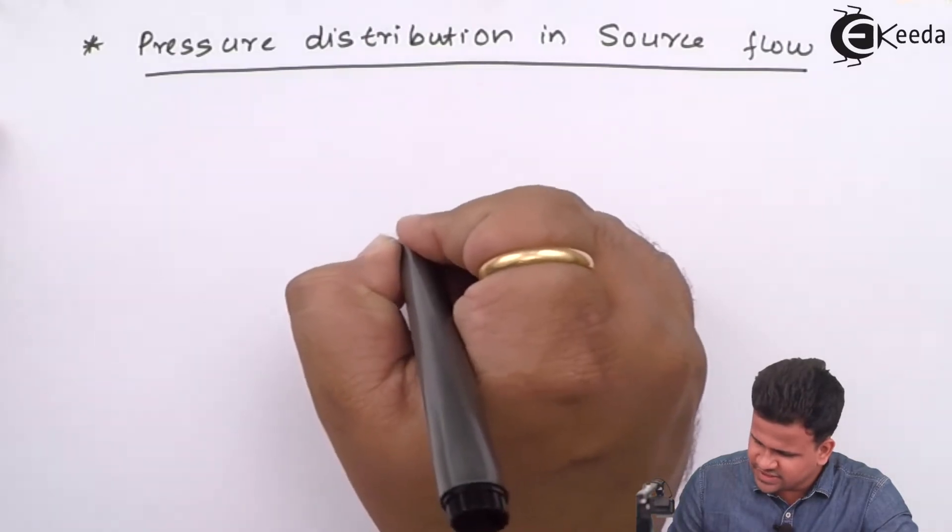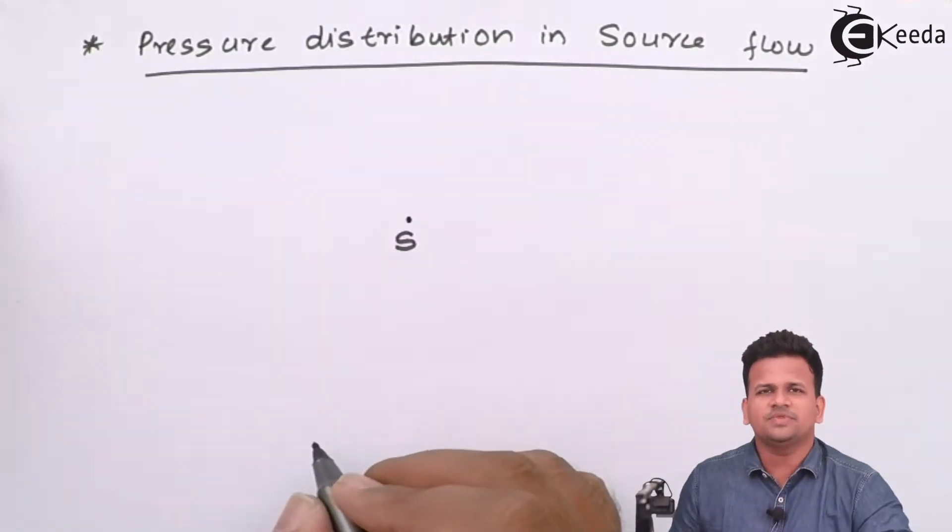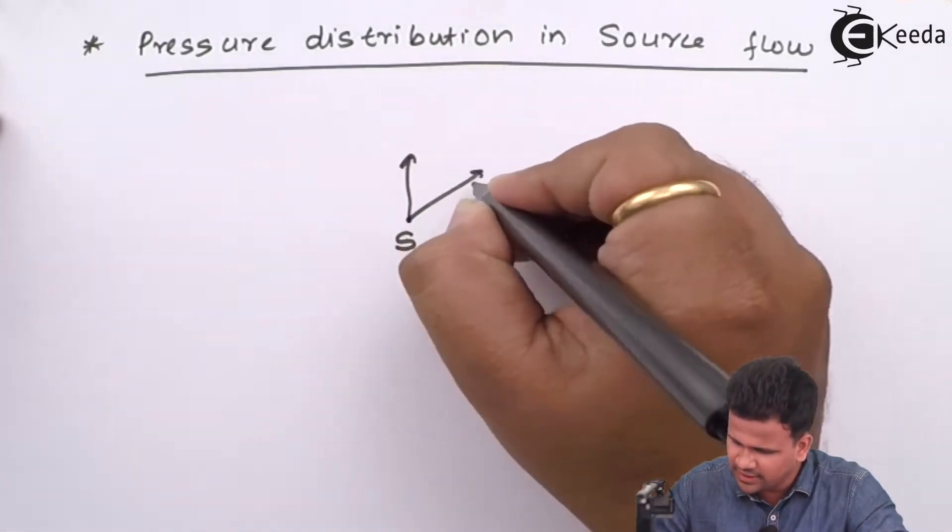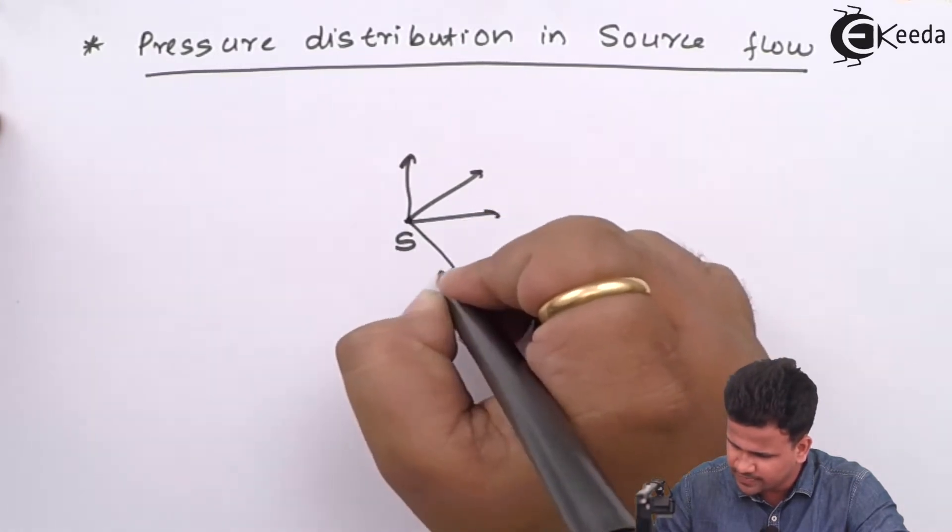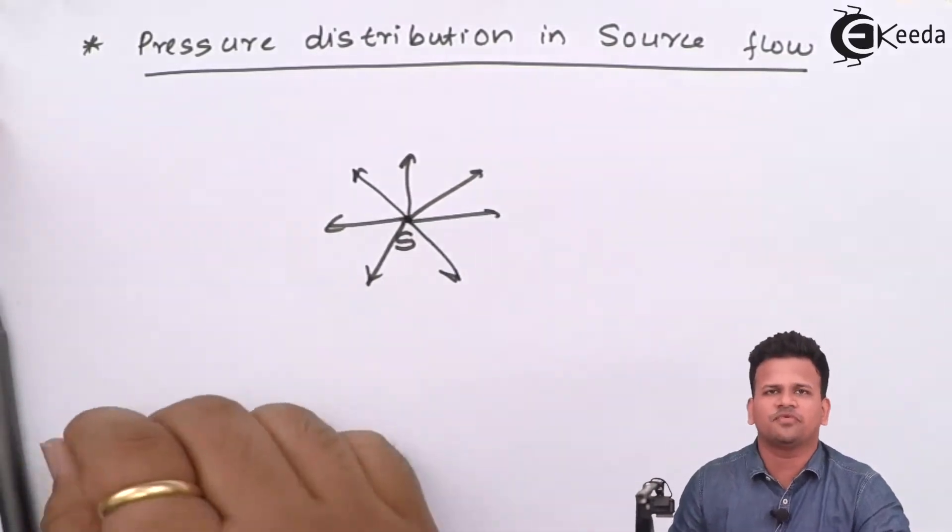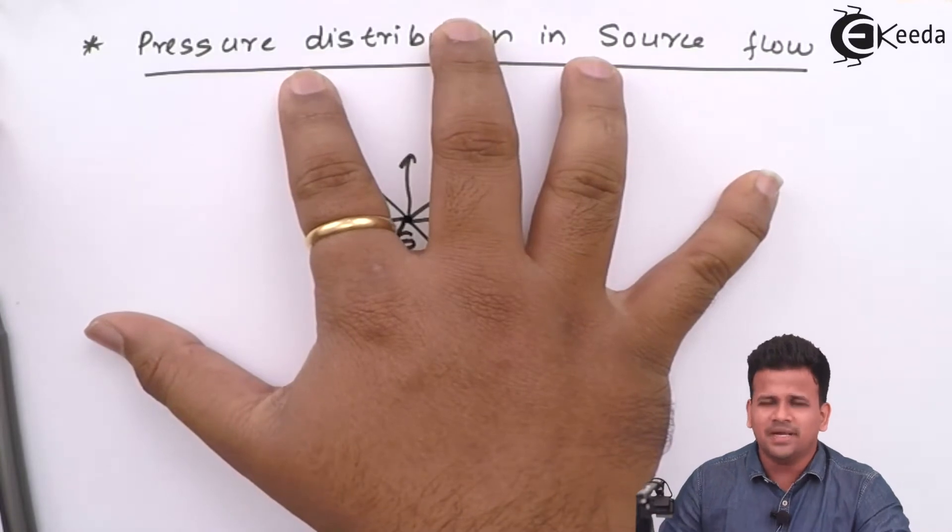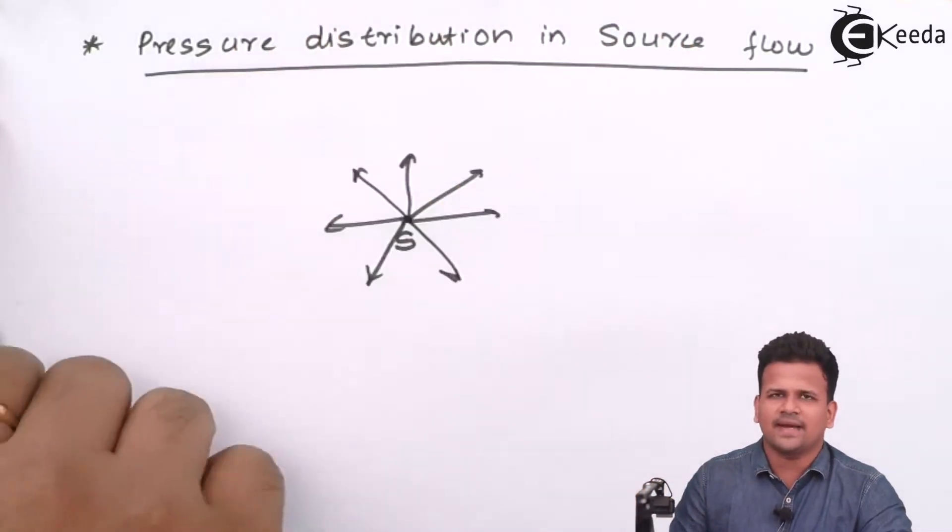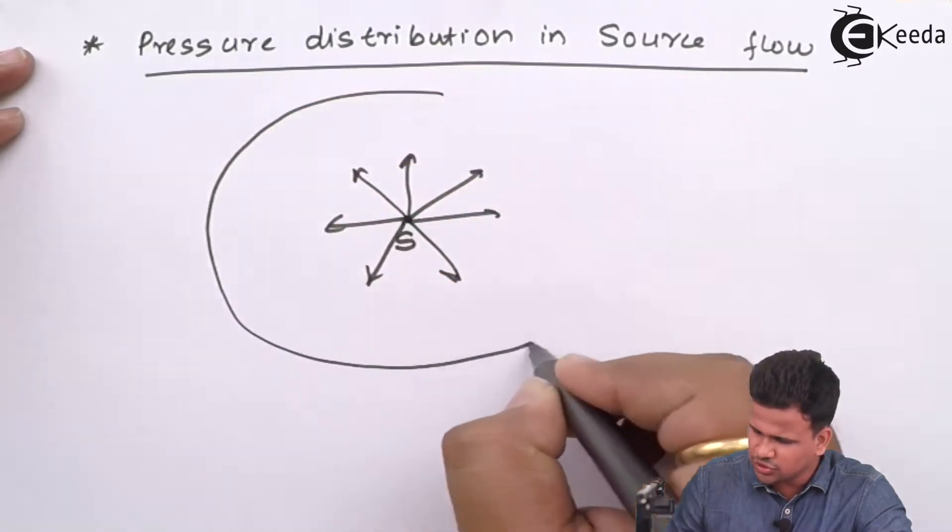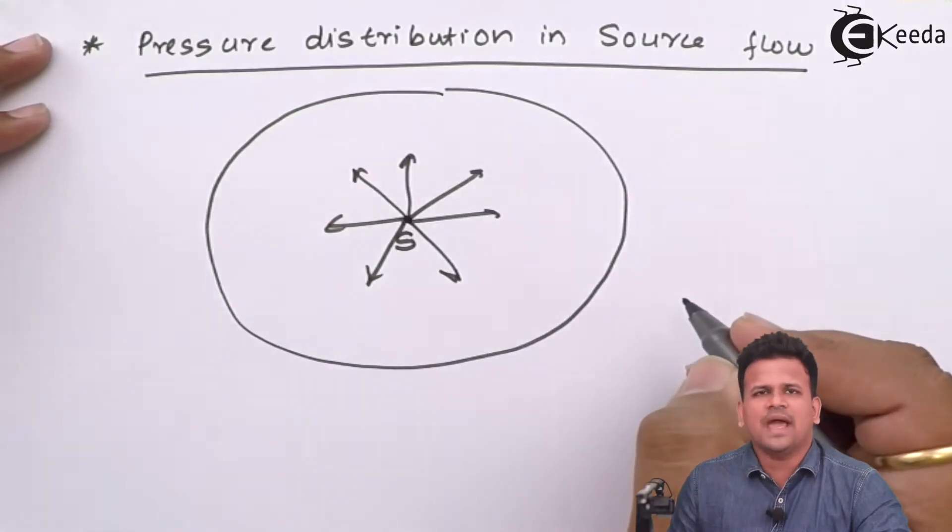Let us consider this small point as your source. Now from this source point, all the fluid will travel radially outwards. The best example of a source flow is the water flowing from the tap—as it hits the ground, it flows radially outwards. After covering some distance from the source, the entire fluid will be at rest.